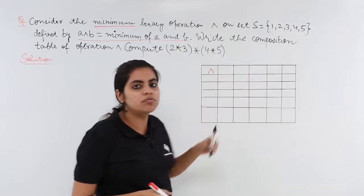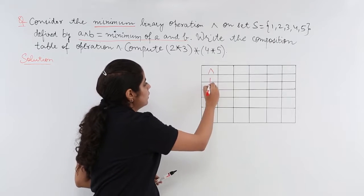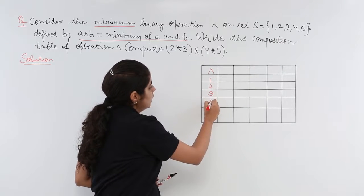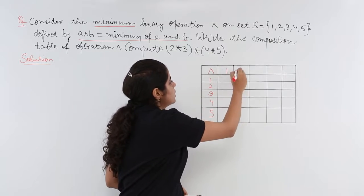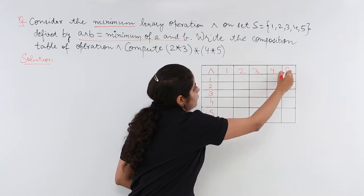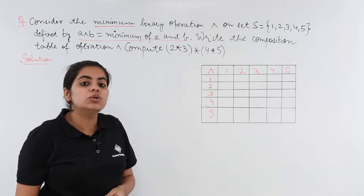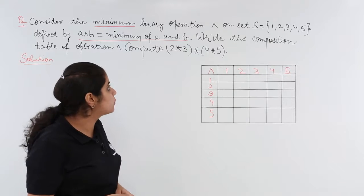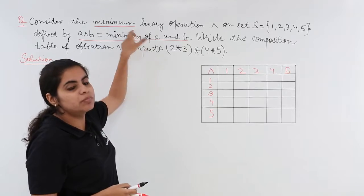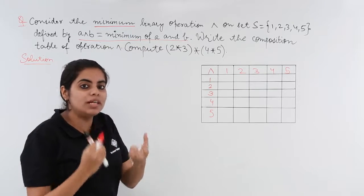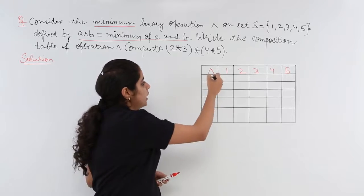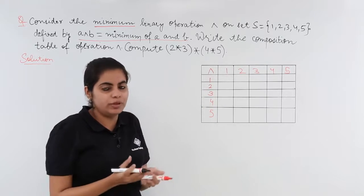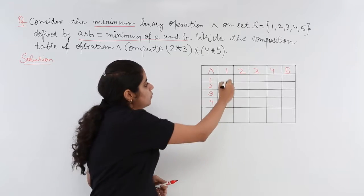The elements are 1, 2, 3, 4, 5. You write 1, 2, 3, 4, and 5 in the first row. Now you are supposed to find the minimum, which means the lesser value. 1 and 1, both are same, so the minimum is 1 only.